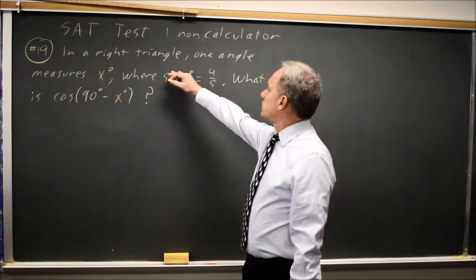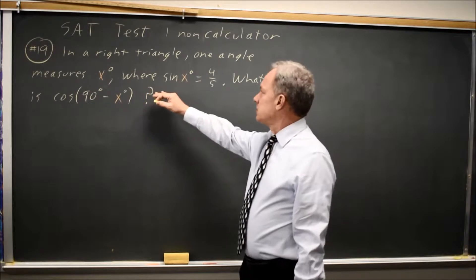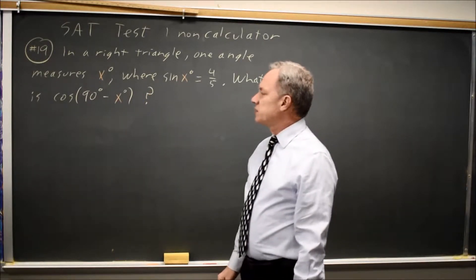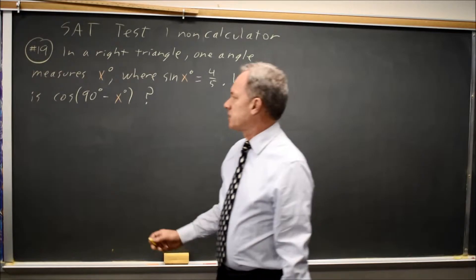In this case, in a right triangle, one angle measures x degrees, where sine of x is 4/5. They're asking, what is the cosine of (90 - x) degrees?